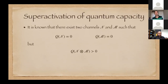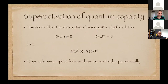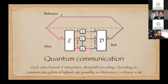There's an amazing effect in distinction to classical information theory, discovered by Graham Smith and John Yard: there exist quantum channels for which individually the quantum capacity is zero, but if you use the channels together, the quantum capacity can be strictly greater than zero. That's called superactivation of quantum capacity. The channels for which this is known have an explicit form and can be realized experimentally, though demonstrating the effect requires using the channels many times with local encodings and decodings — essentially requiring a quantum computer.